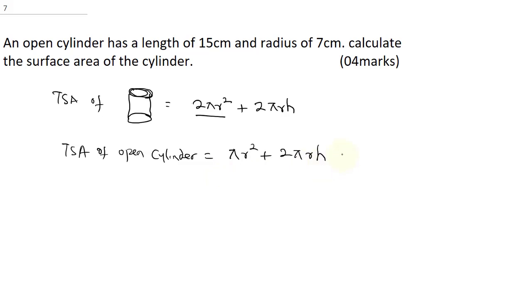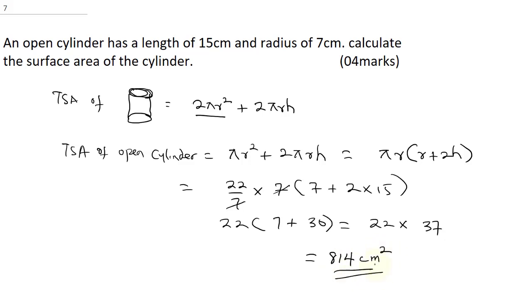This means πr is common, which will now be πr times (r plus 2h). So we'll be putting in our formula that has 22 over 7 times our radius is 7 into 7 plus 2 times 15. 7 is going to cancel at 7. We'll have 22 into 7 plus 30. This is going to give us 22 times 37. When you multiply 22 by 37, you're going to get 814 cm². Remember, you're looking for area, so it's 814 cm squared.